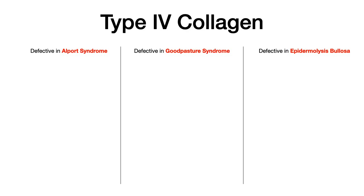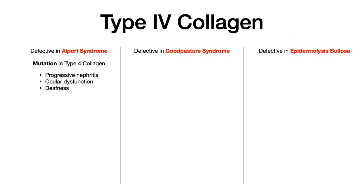Type 4 collagen throws a lot of medical students off because there are three different diseases all implicated in type 4 collagen. The three diseases we need to talk about are Alport syndrome, Goodpasture syndrome, and epidermolysis bullosa. For Alport syndrome, this is a pure mutation in type 4 collagen. Because type 4 collagen is found in the kidney, in the eye, and in the ear, the symptoms shouldn't surprise you: progressive nephritis, ocular dysfunction, and deafness. That's Alport syndrome — due to a pure mutation of type 4 collagen.